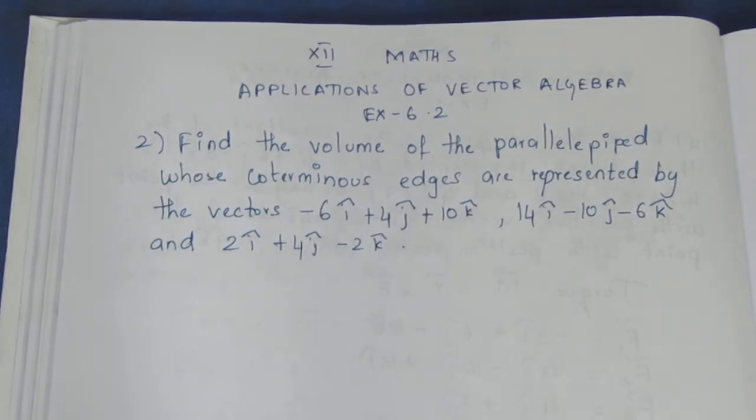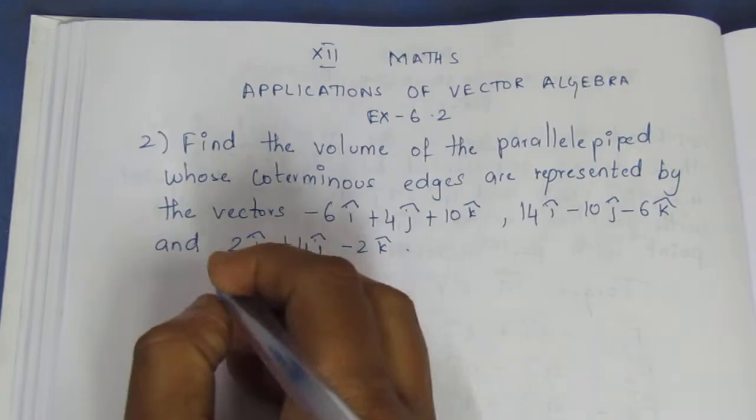For a parallelepiped, we have coterminus edges OA, OB, and OC.